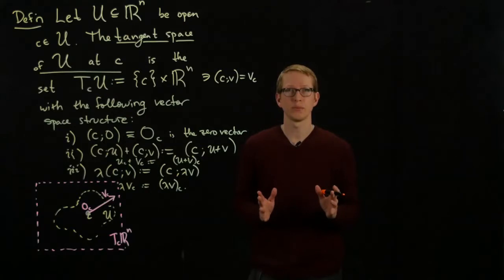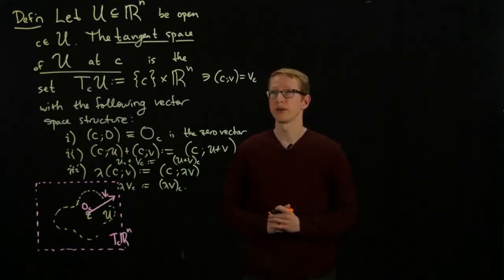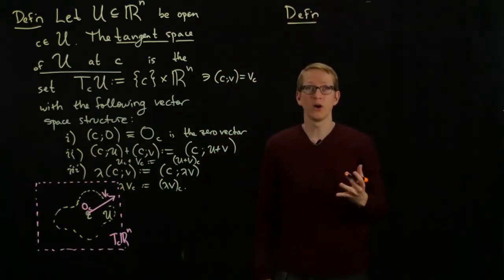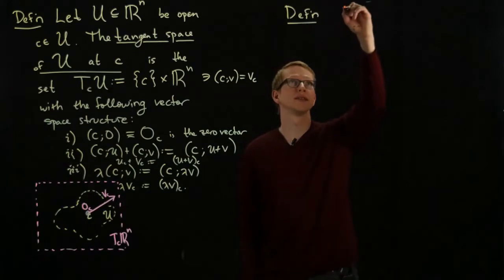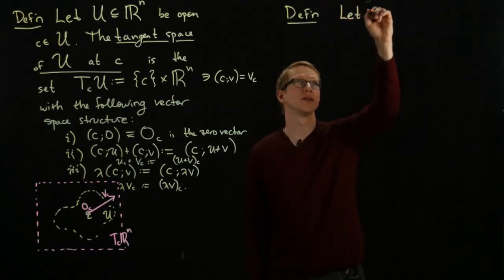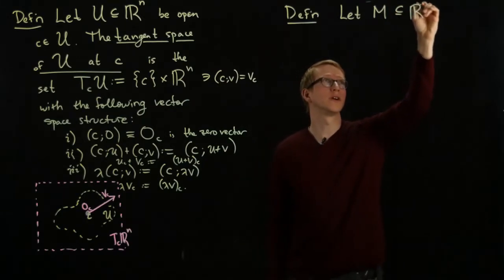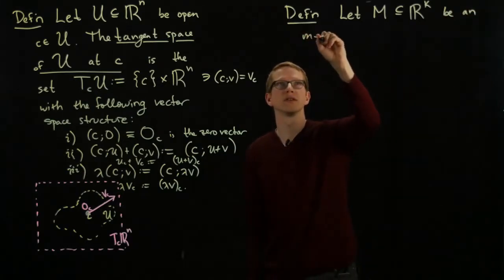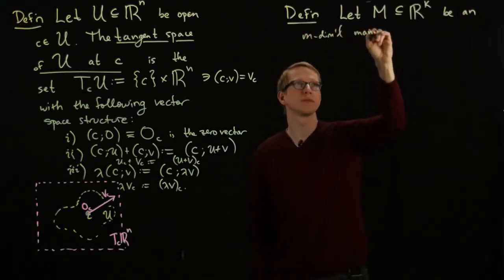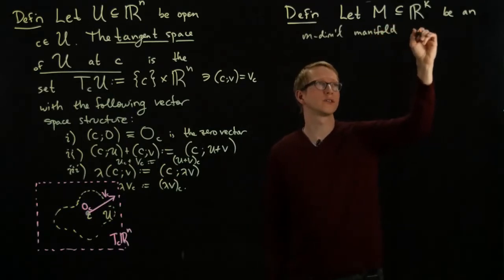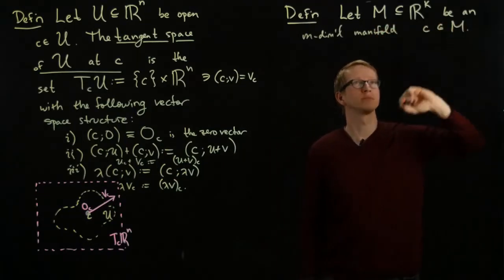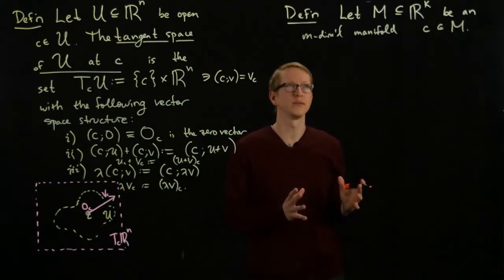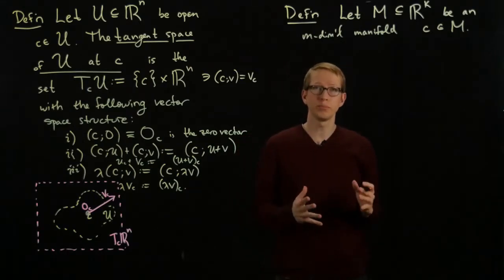Now, to define the tangent space of a manifold, we do something very similar. Our manifolds are subsets. Let M be a subset of Rk, and let's say it's m-dimensional. Also, let's focus on a point c in M. Around any point c in M, we know that we have a coordinate patch, a coordinate system of M about that point. So let's pick one for now.